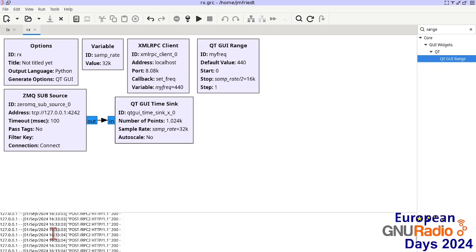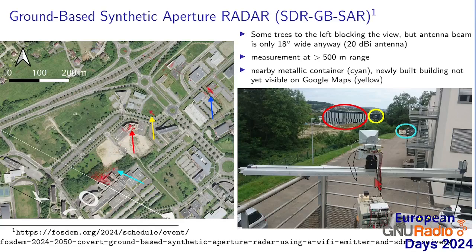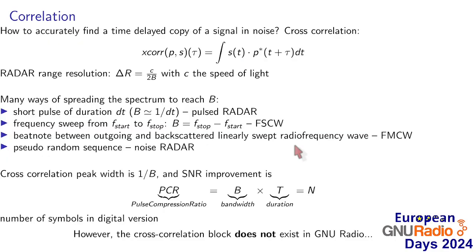This concludes the set of tutorials about GNURadio Companion and how to interact between GNURadio and external software for distributed processing. The last topic is: we can now record data on a remote processor that collects a continuous stream but only records when the antenna is in a static position — and we wish to know the range to various targets. How do we calculate range?